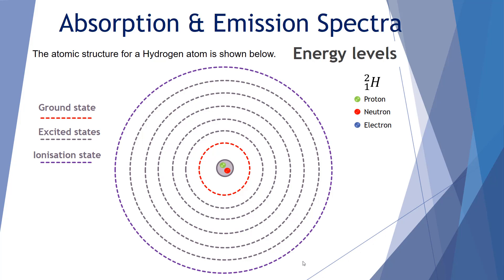There's also a final energy level called the ionization state. An electron that reaches the ionization state is free to leave the atom structure altogether and create an ion.